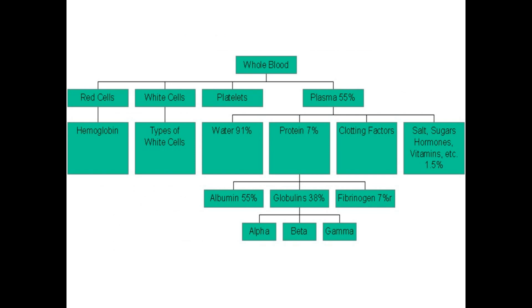The composition of whole blood includes different types of cells and plasma. The cells are of three types: RBC (red blood cells or erythrocytes), WBC (white blood cells or leukocytes), and platelets — these make up about 45% of whole blood. Plasma is 55% of whole blood and includes water (91%) and proteins (7%), known as plasma proteins.